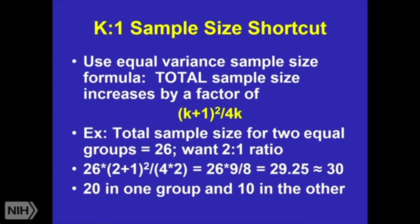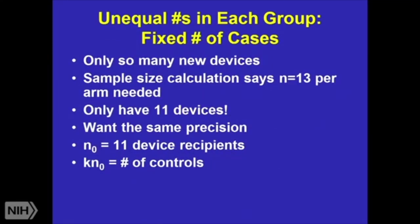Why might I do this? Sometimes I have a device — let's say I have a new artificial knee — and I want to know how many knees I need to make, and I want to do an unequal randomization. This might be a case where I use that. Sometimes I have a fixed number of cases; I've already made the knees and I only have so many to use. So if my sample size calculation said I needed 13 per arm but I only have 11 of the knees, and I want the same precision, then I'm going to back-calculate how many people will be in my control arm using this formula.